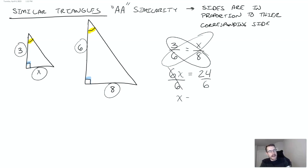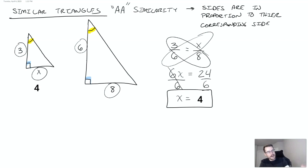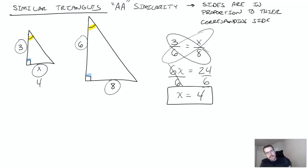Then simply divide by six, and we get that x is equal to four. That makes perfect sense because three is half of six. Let's continue on and look at another example.